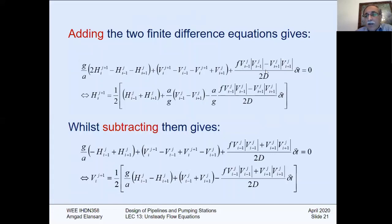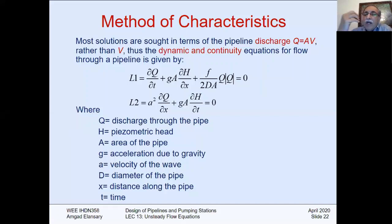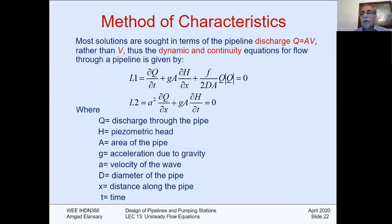We used a first approximation with the steady-state friction factor — a linear approximation. Now I will show another form which is much easier. Most pipeline solutions are in terms of discharge q, where q equals A times v, rather than velocity. So in the previous slides I calculated h and v; here I will calculate h and q. It's the same thing but easier to continue the discussion.